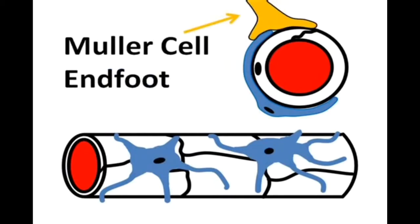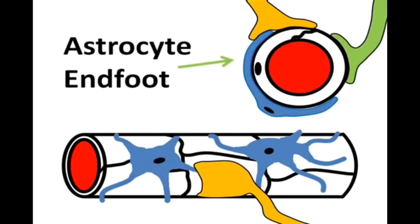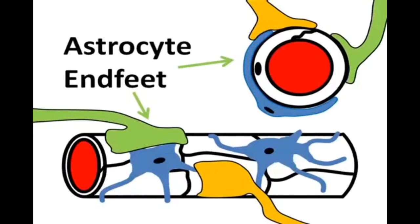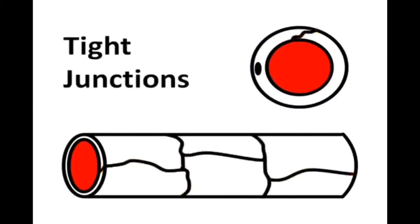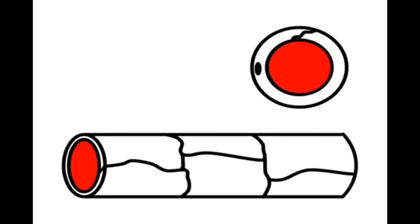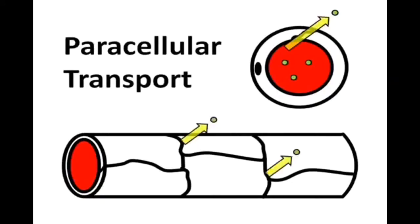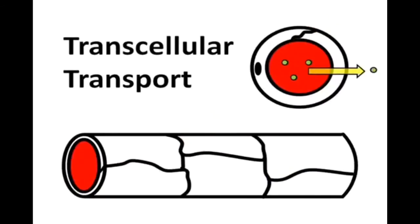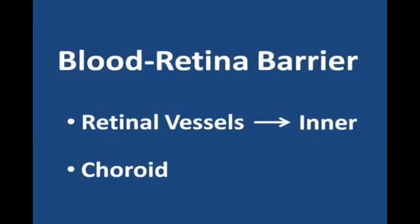Mueller cells surround, protect and help many of the other cells of the retina. And in the nerve fiber layer, astrocytes surround and protect the nerve fibers. In between the endothelial cells and completely surrounding the outer edge of each cell are special proteins which form a connection from one edge of a cell to another. These close connections are called tight junctions. Because of the tight junctions, large molecules like plasma proteins, charged particles like ions, and water are not freely able to enter the retinal tissue by simply slipping in between the edges of the endothelial cells. Instead, for substances to gain access to the retinal tissue, they must pass through the endothelial cell in a process called transcellular transport. So the inner blood-retinal barrier consists not only of the tight junctions, but also of the endothelial cells and the surrounding structures that limit access to the retina.